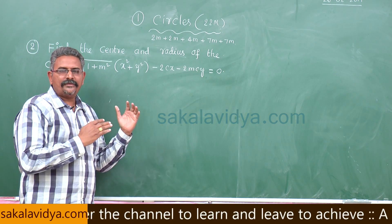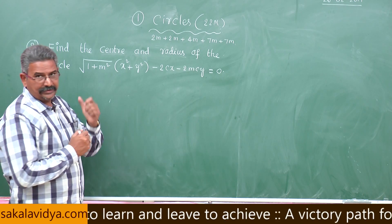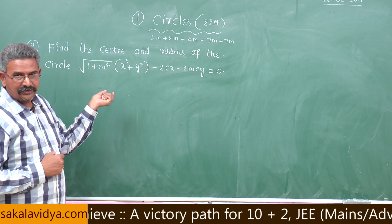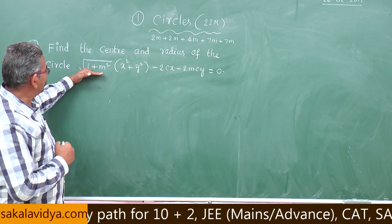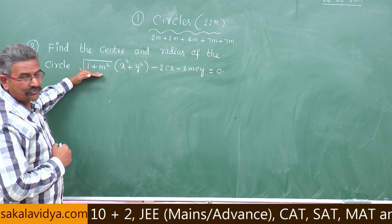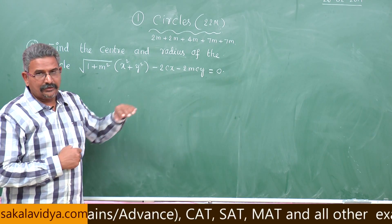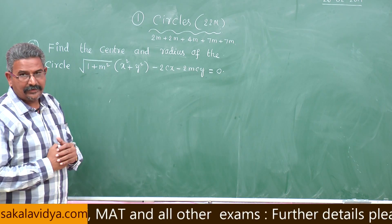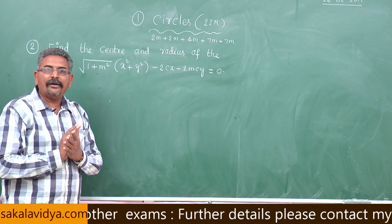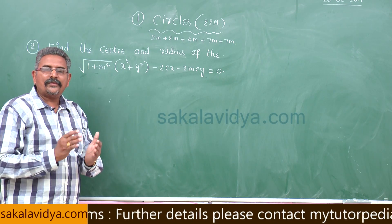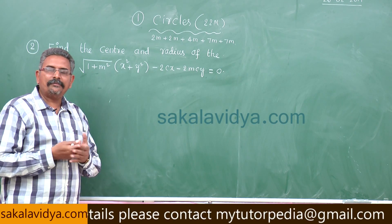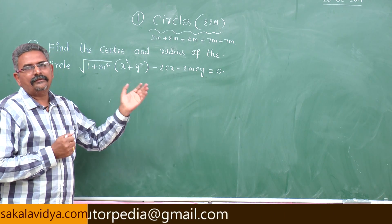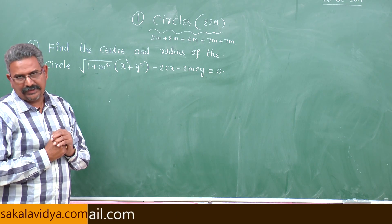This problem seems to be typical, but it is very easy. If you observe the given equation of the circle, there is a factor of √(1+m²). So first of all, divide this equation on both sides by √(1+m²), then the equation can be put in the standard form x² + y² + 2gx + 2fy + c = 0, and we can compare to get the values of g, f, and c.